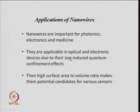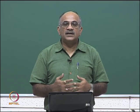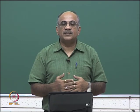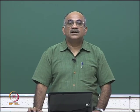Nanowires are applicable wherever size-induced quantum confinement effects play a role, since such effects are observable in them. The high surface-area-to-volume ratio makes them potential candidates for various sensors — the surface of the wire must sense the environment around it. Higher surface area means more incoming molecules can be sensed, making a large surface-area-to-volume ratio very important for sensing applications.